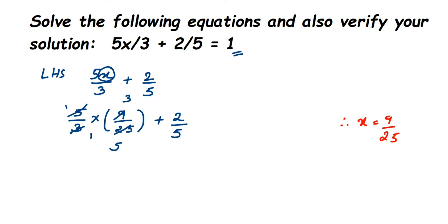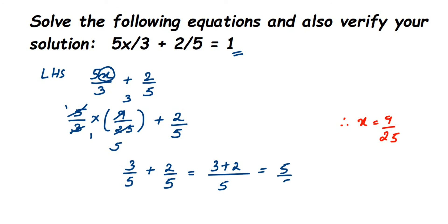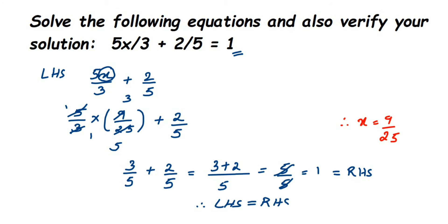After cancellation we get 3 by 5 plus 2 by 5. Both denominators are 5, so we add the numerators directly: 3 plus 2 equals 5, giving 5 by 5. The 5s cancel and we get 1. The RHS is also equal to 1, which is the same. Therefore LHS equals RHS, which means this equation is verified and the answer obtained is correct. I hope this question is clear — if you have other questions or doubts, you can leave a comment. Thank you so much for watching.